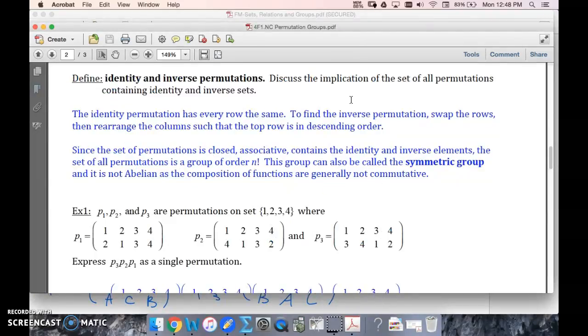Discuss the implication of the set of all permutations containing identity and inverse sets. So the fact that we have an identity and an inverse, we said before that it's associative, and the set of all permutations is closed. Well, we've got our four properties. This means that we've got a group.